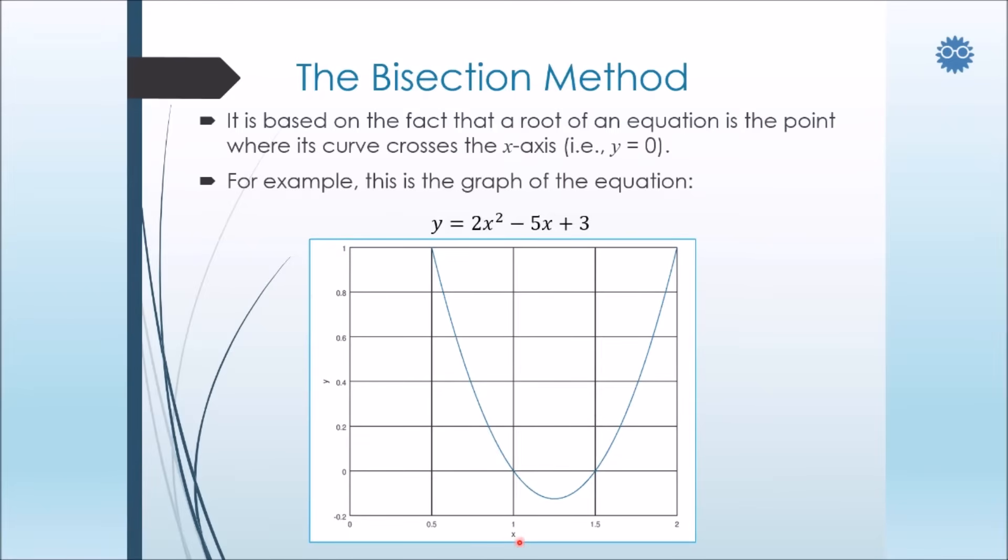Now, at x equals 1, we notice that the root crosses the x-axis where y is equal to zero. So just before the root, the values of y are positive, and after the root, the values of y are negative.